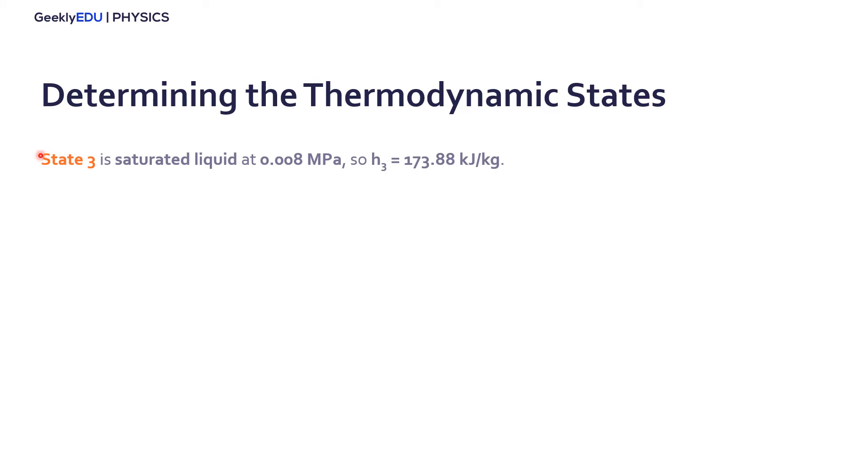Let's keep going then for state number three, when it leaves the condenser. When we leave the condenser, we need to have saturated liquid because it's going to enter the pump. We can only pump liquid. No vapor can enter a pump. So we need to be at least saturated liquid. And we have the pressure there. So from the thermodynamic tables, we find H three, the enthalpy at point at state three.